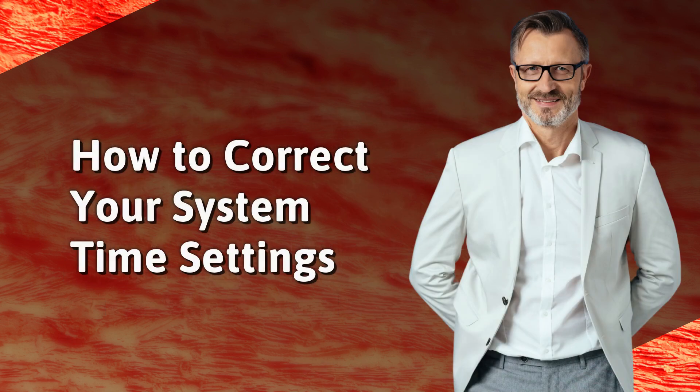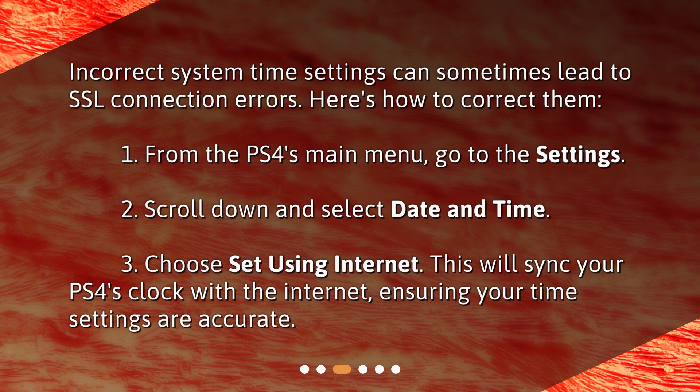How to correct your system time settings: Incorrect system time settings can sometimes lead to SSL connection errors. Here's how to correct them: 1. From the PS4's main menu, go to Settings. 2. Scroll down and select Date and Time. 3. Choose 'Set Using Internet.' This will sync your PS4's clock with the internet, ensuring your time settings are accurate.